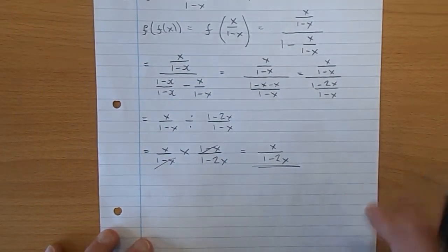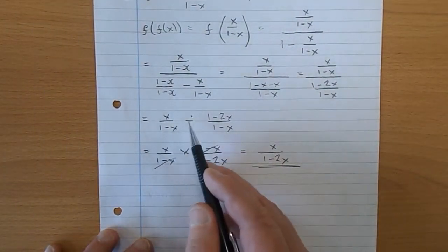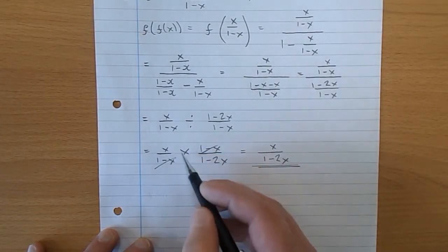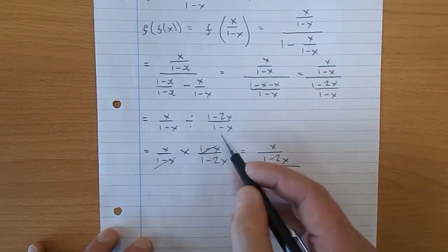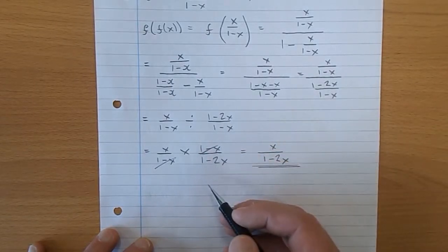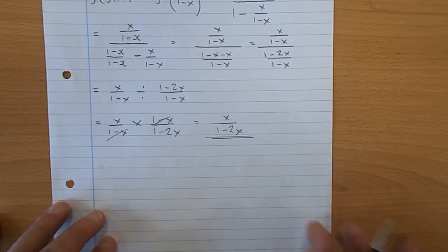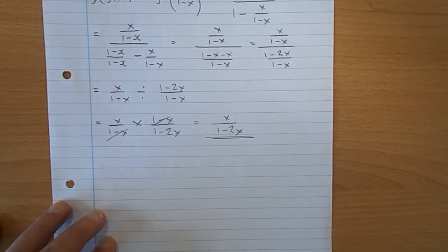Now just tidying it up here, what's x over 1 take x divided by 1 take 2x over 1 take x? Well, it's x over 1 take x times, and you invert this round, 1 take x over 1 take 2x. The x's cancel out and you're left with x over 1 take 2x.